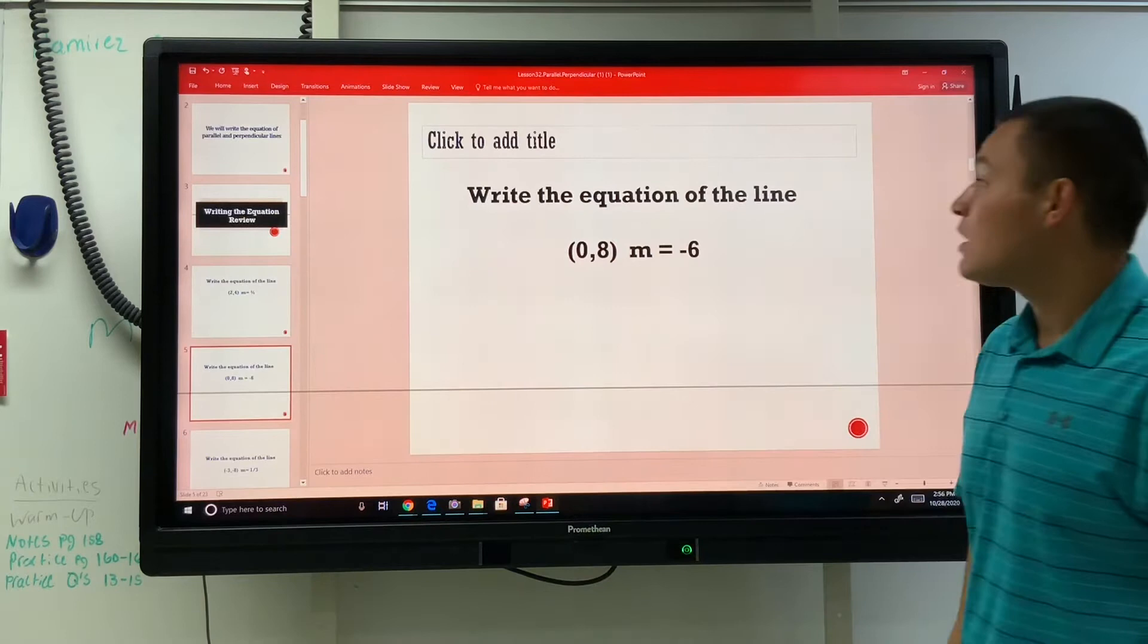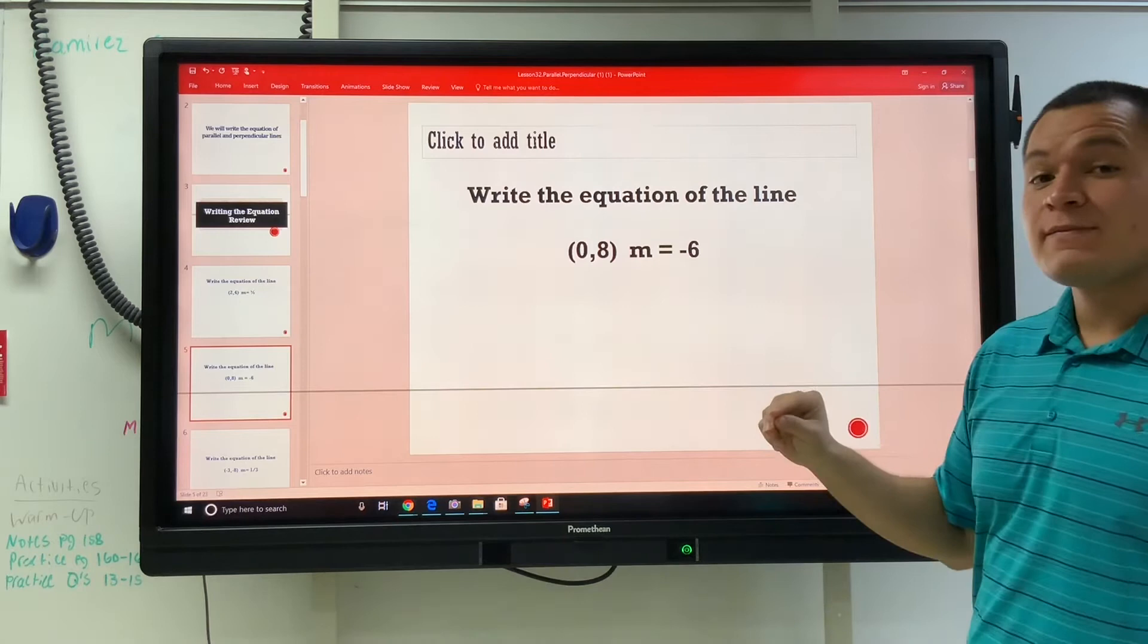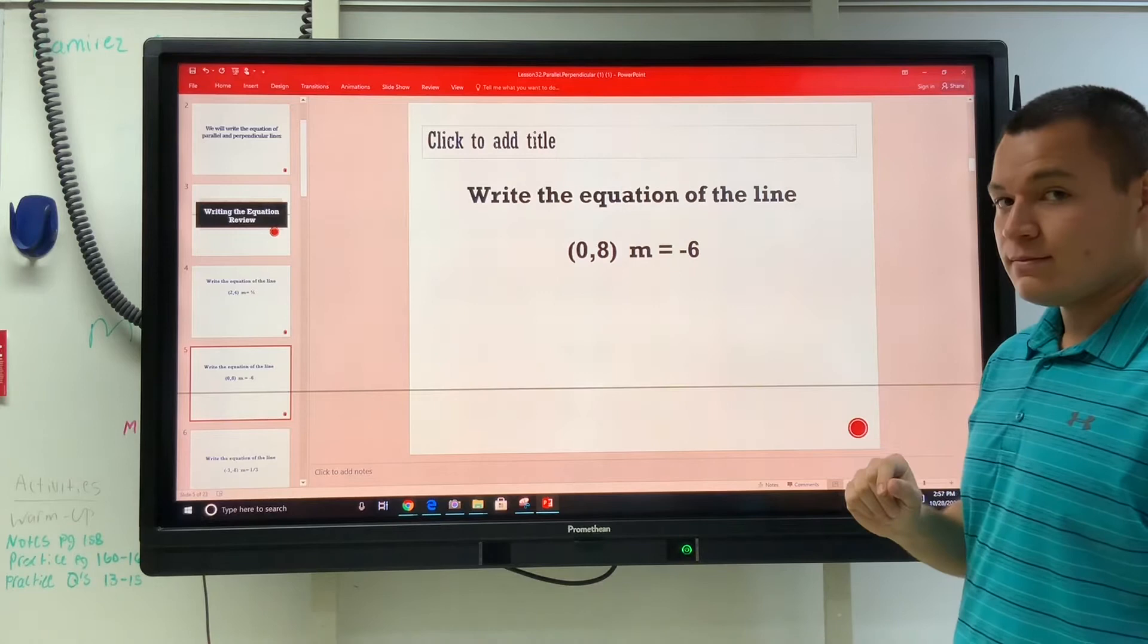Given 0 comma 8, that's a point, and m is negative 6. Write the equation in slope intercept form, y equals mx plus b, write the equation for this.